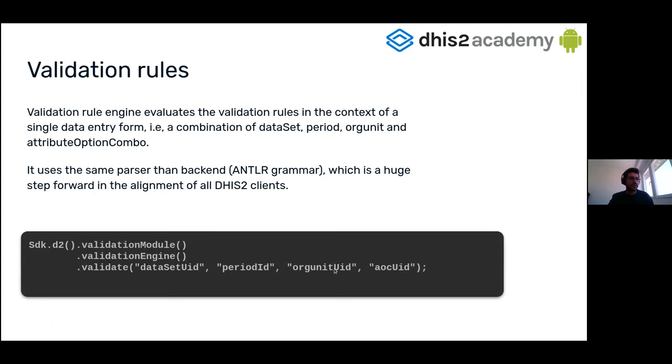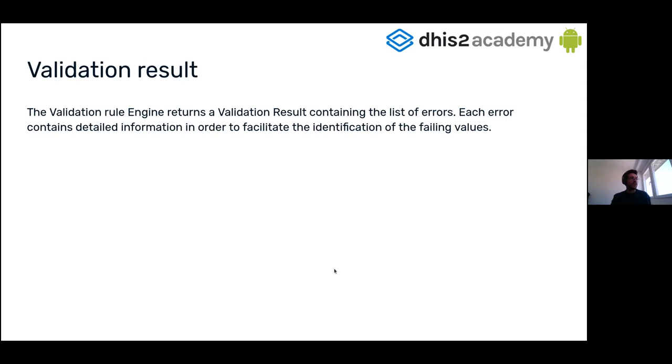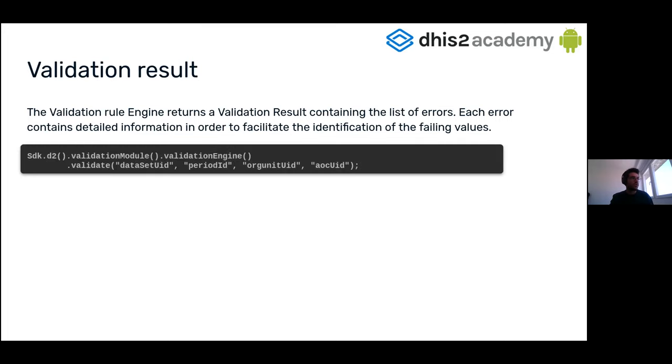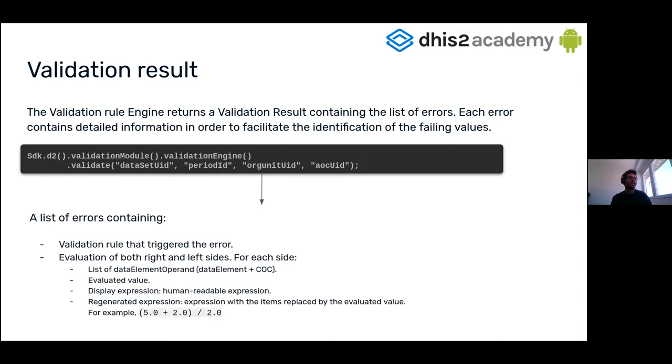What about the result? The result of the validation method is a list of validation errors. So when you run when you execute this method, what you get is a list of errors.